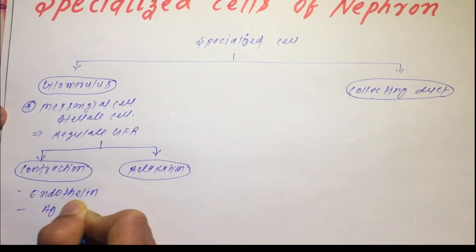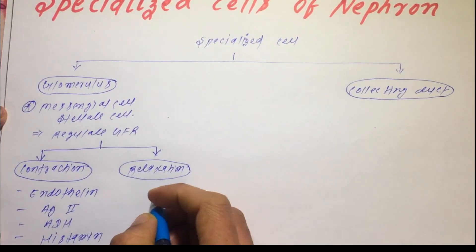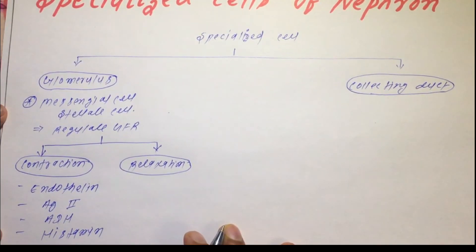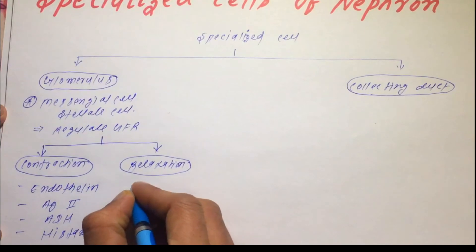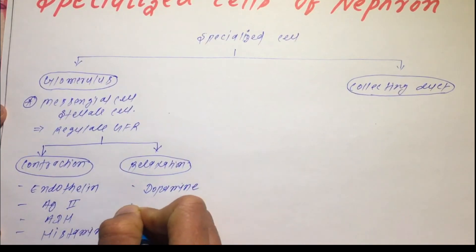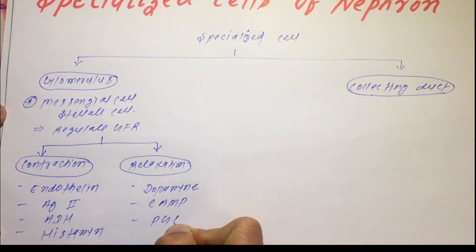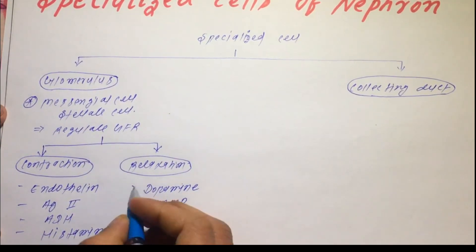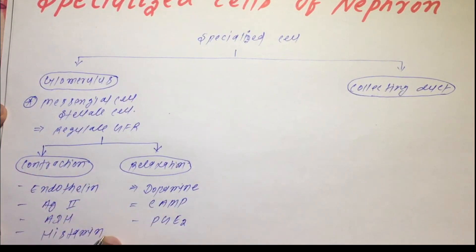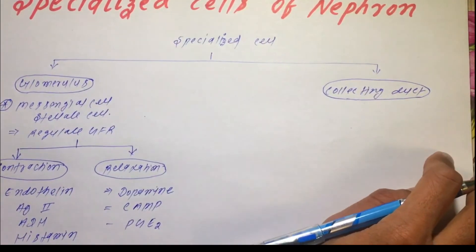The mediators causing contraction are: endothelin, angiotensin 2, ADH (anti-diuretic hormone), and histamine. On the other hand, for the relaxation of the mesangial cell, it is mediated by dopamine, cyclic AMP, and prostaglandin. Just remember which mediators cause relaxation and which cause contraction in the mesangial cell.